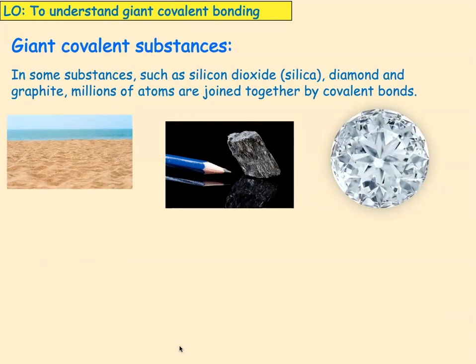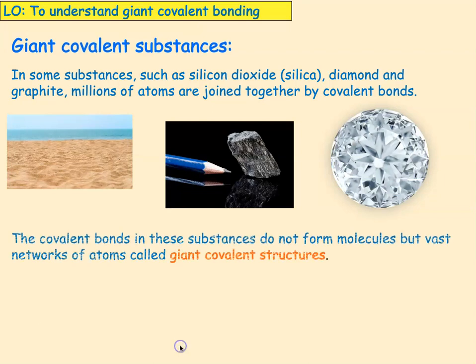In some substances, such as silicon dioxide or silica, in diamond and in graphite, millions of atoms are joined together by covalent bonds. The covalent bonds in these substances do not form molecules, which are small and just a few atoms, but vast networks of atoms called giant covalent structures.